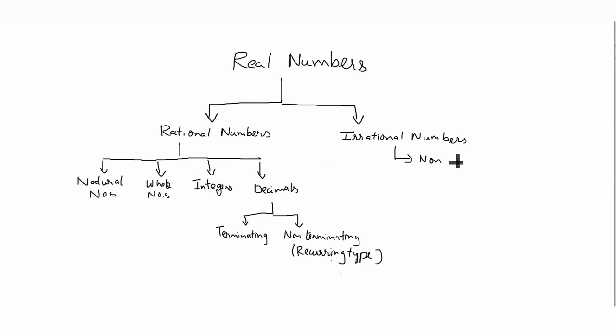Irrational numbers are also non-terminating decimals, but they are non-recurring in nature. Also, irrational numbers have surds. Let us see what are irrational numbers in detail. Basically, irrational numbers are represented by a set denoted by Q'.